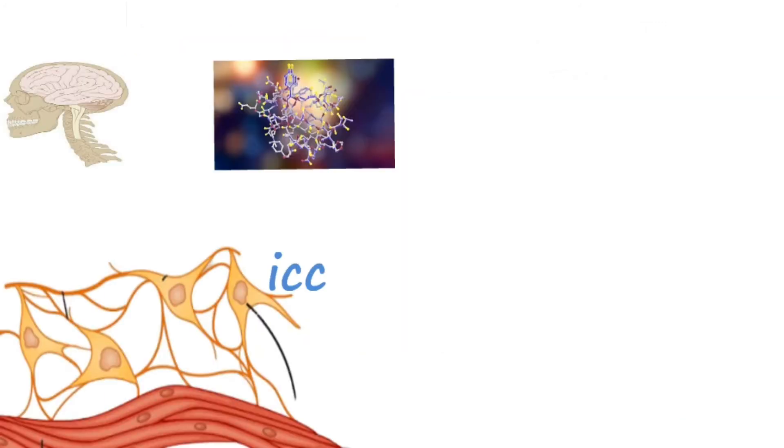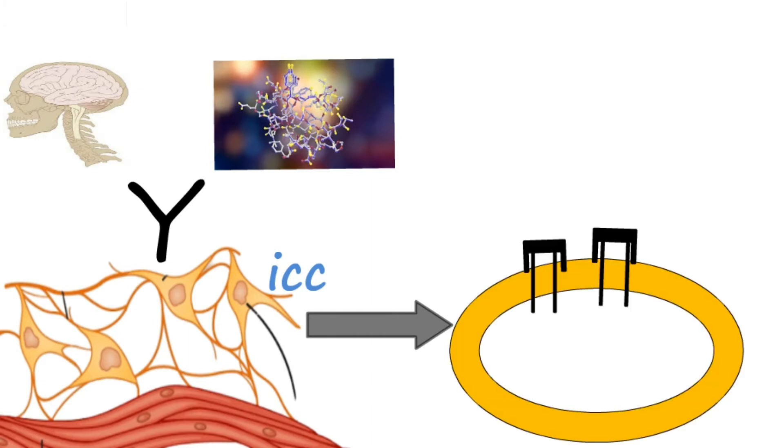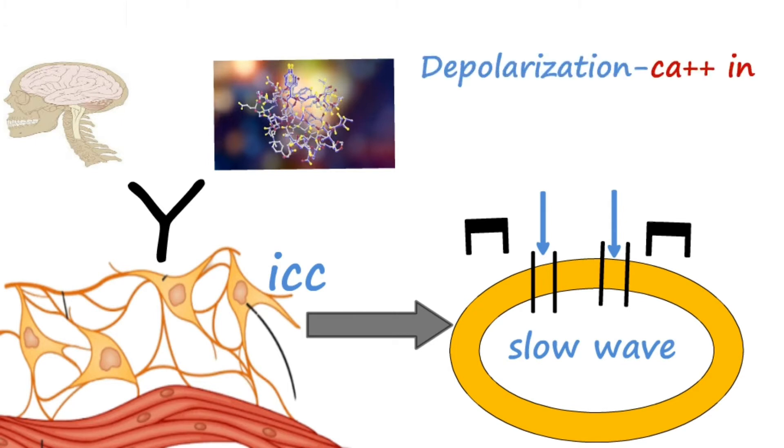When any neural or hormonal signal is received by the pacemaker cells, some unique ion channels open in them periodically and this produces an inward current. Hence it generates a slow wave activity. The depolarization is caused due to calcium influx,